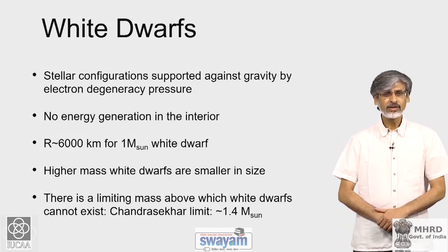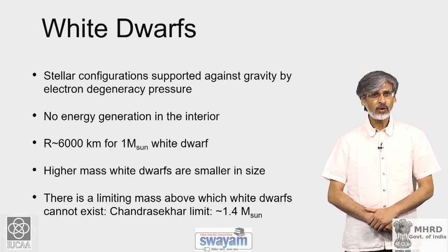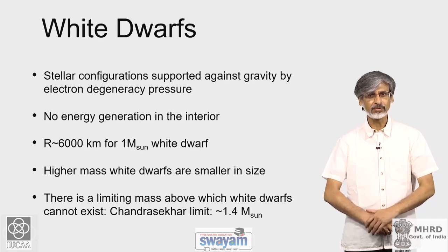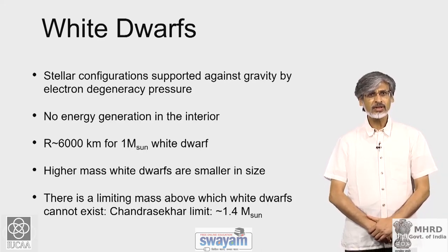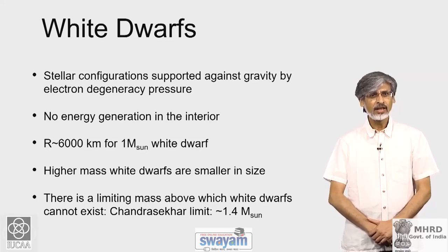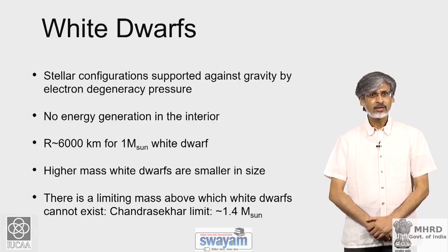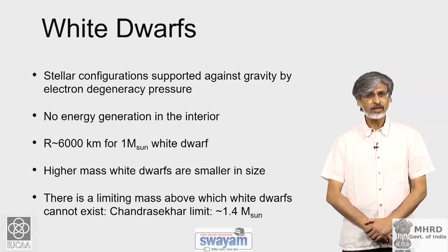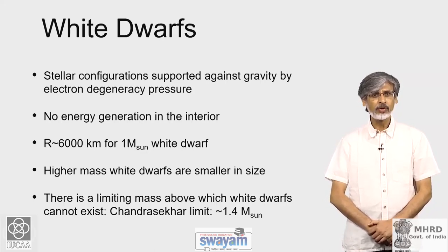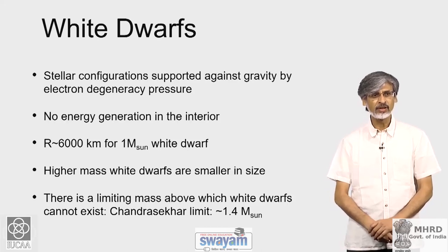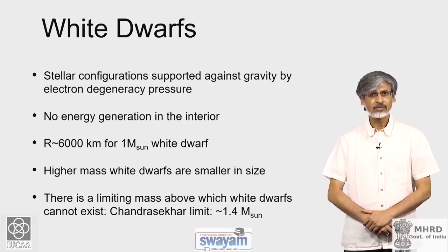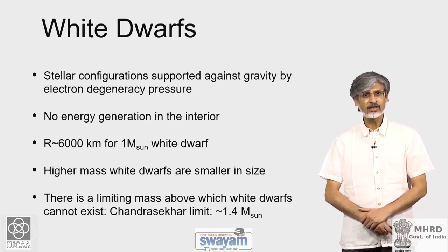In the previous module, we introduced white dwarfs as one family of compact stars. Let us recall some of the salient features of white dwarfs. White dwarfs are stellar configurations supported against gravity by electron degeneracy pressure. However, there is no energy generation in the interior, but since electron degeneracy pressure is not dependent on temperature, even in the absence of energy generation, electron degeneracy pressure is able to provide long-term support against gravity. So you have a stable, long-lived star — the white dwarf — which does not require energy generation in the interior.